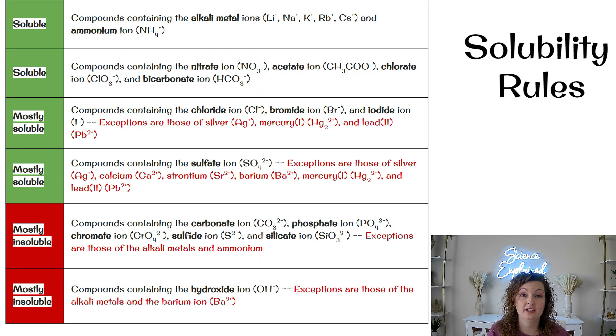And the exceptions are where it kind of gets a little fuzzy, right? So compounds containing chloride ions, bromide ions, iodine ions are going to be soluble with the exception of silver, mercury, and lead. So you're just going to have to memorize. Those are the exceptions to the rules and they will be insoluble.